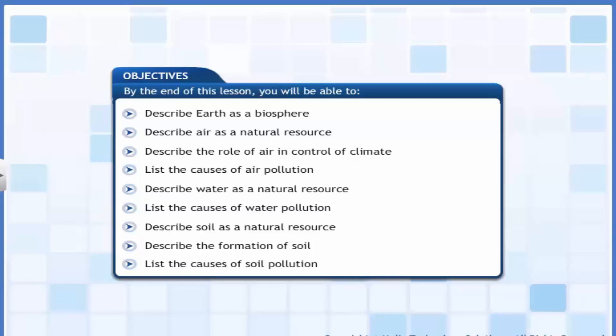By the end of this lesson you will be able to describe Earth as a biosphere, describe air as a natural resource, describe the role of air in control of climate, list the causes of air pollution, describe water as a natural resource, list the causes of water pollution, describe soil as a natural resource, describe the formation of soil, and list the causes of soil pollution.